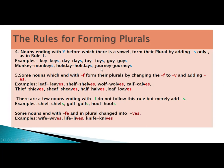Rule number five: some nouns ending in F form their plural by changing F to V and adding ES. For example: leaf→leaves, shelf→shelves, wolf→wolves, calf→calves, thief→thieves, sheaf→sheaves, half→halves, loaf→loaves.